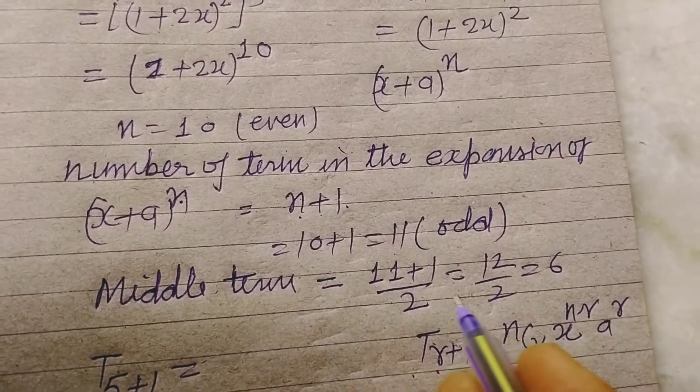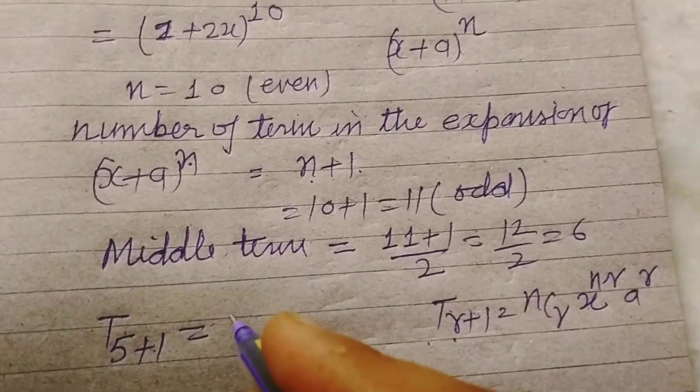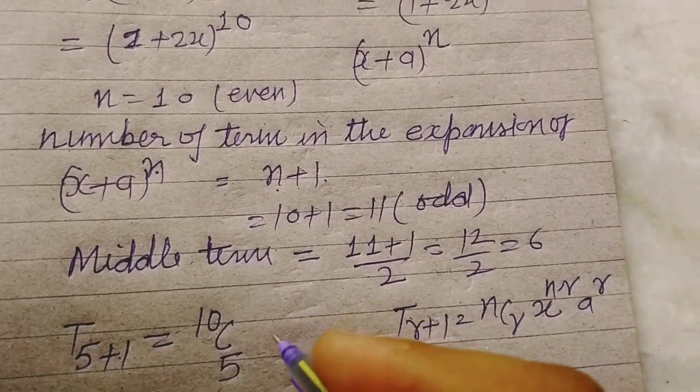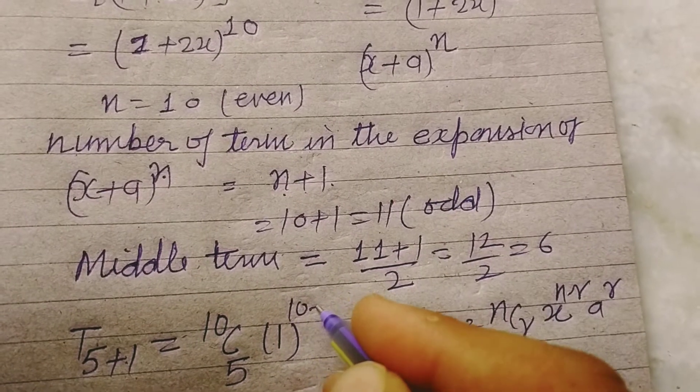So for the 6th term, we can write it as 5 plus 1. So n is how much? 10 c r is 5. a is 1 here. a to the power n minus r, 10 minus 5.